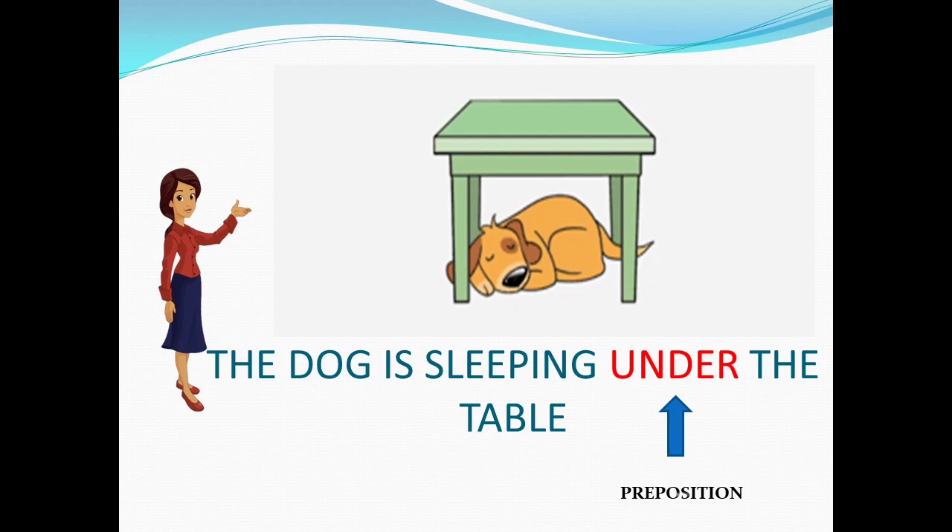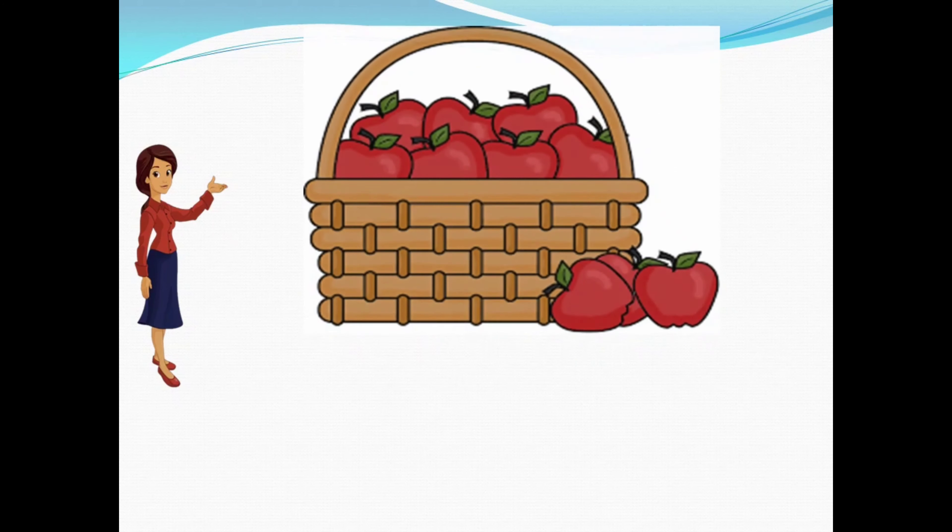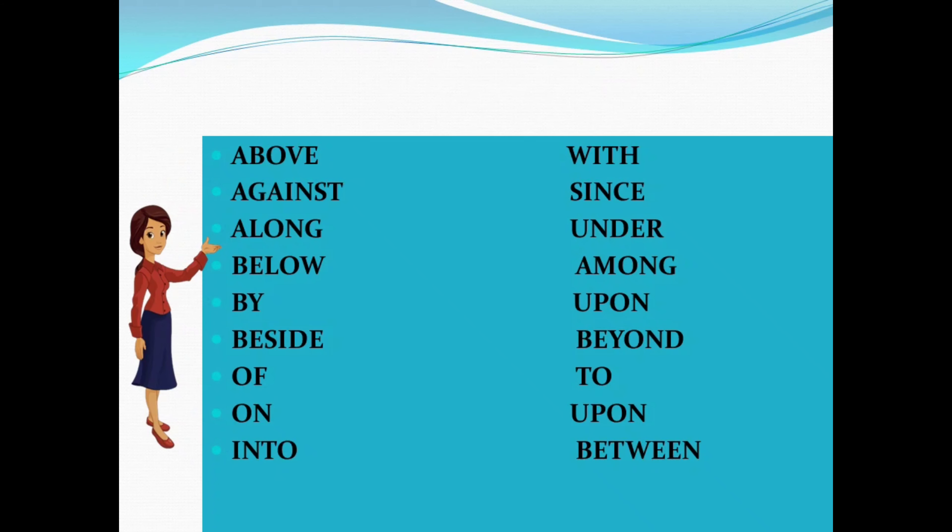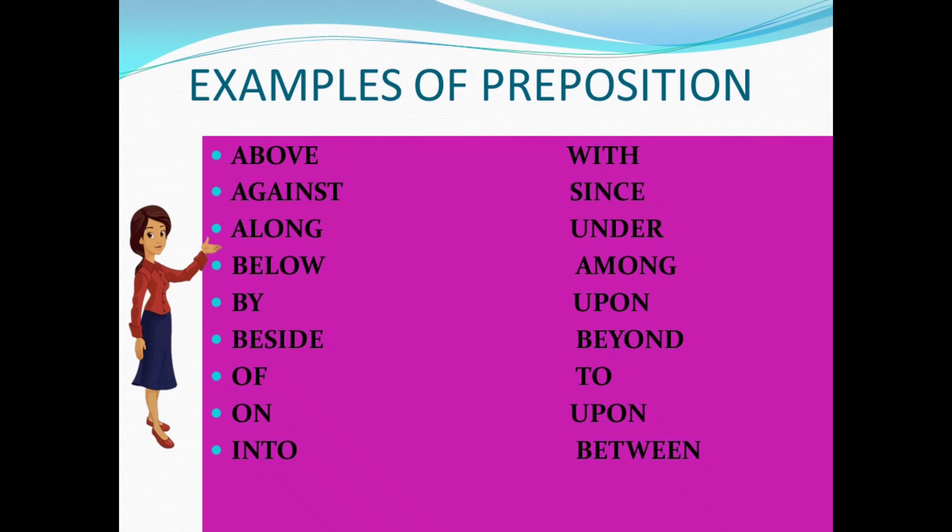It tells us exactly where the dog is sleeping. Dog is sleeping under the table, so 'under' is a preposition. Let's look into one more example. Here we can see a basket full of apples. From this picture we can know that the apples are in the basket. So the word 'in' refers to the preposition.